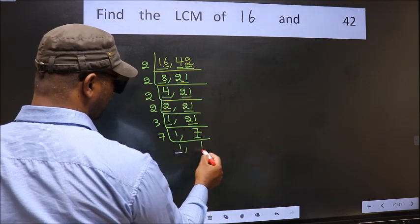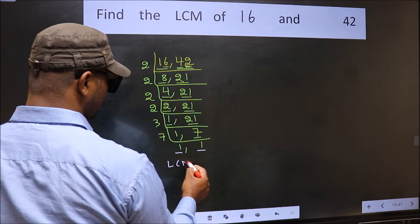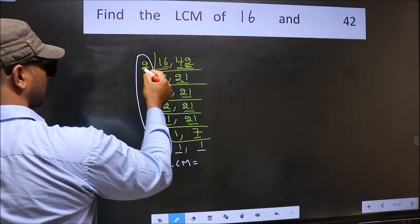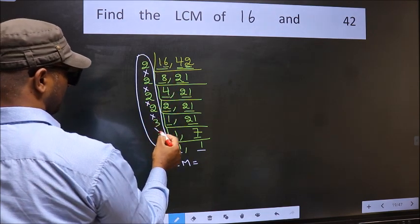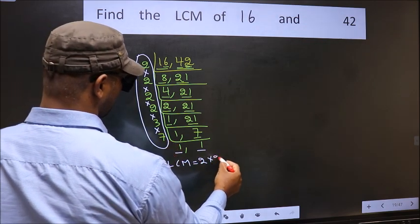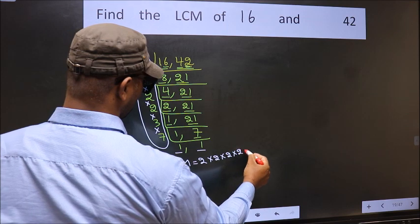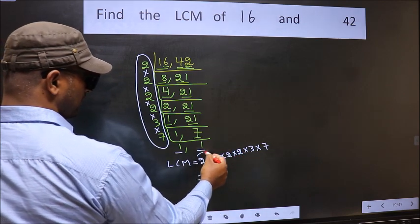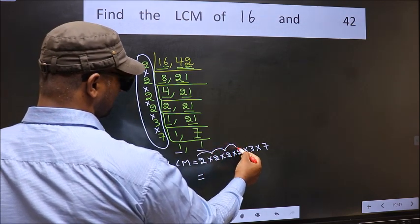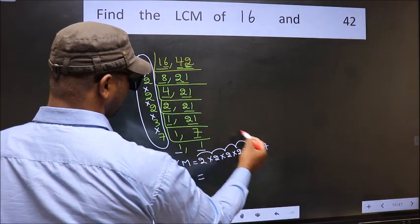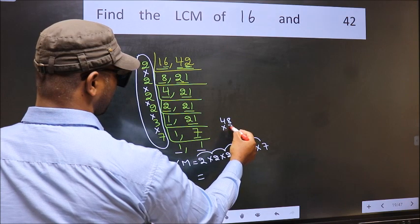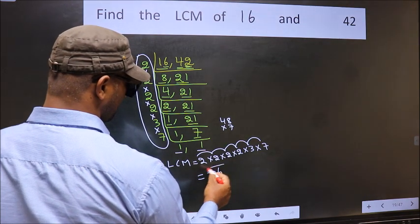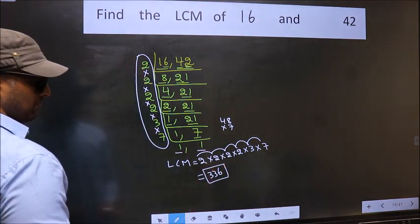We got 1 in both places. So our LCM is the product of these numbers — that is 2 into 2 into 2 into 2 into 3 into 7. Let us multiply these numbers: 7 times 8 is 56, 7 times 4 is 28 plus 5 is 33. So 336 is our LCM. Thank you, visit us anytime soon.